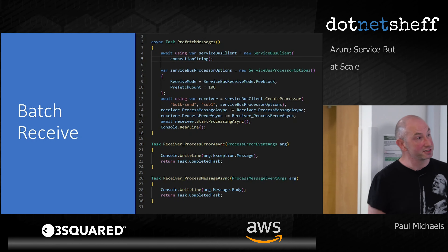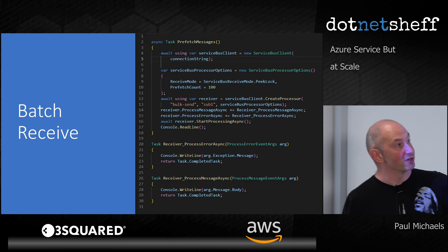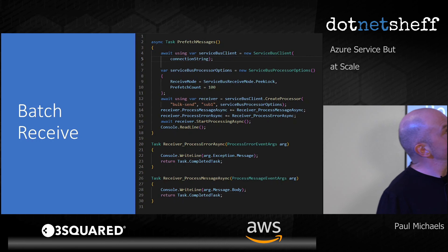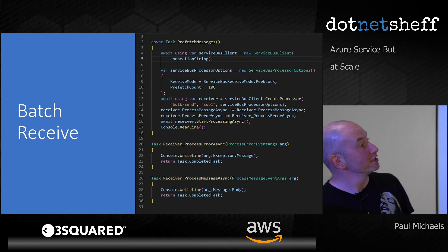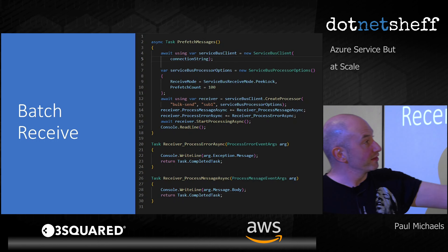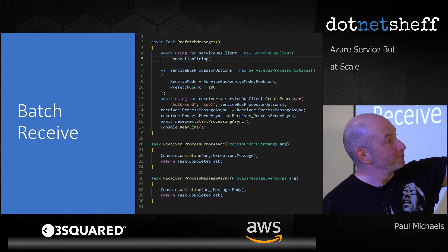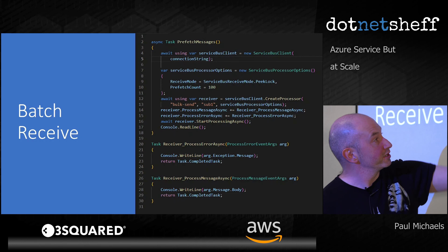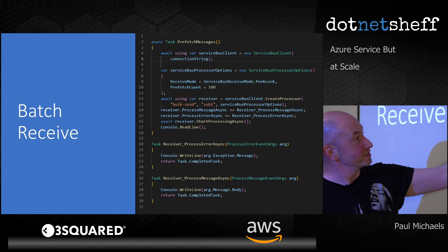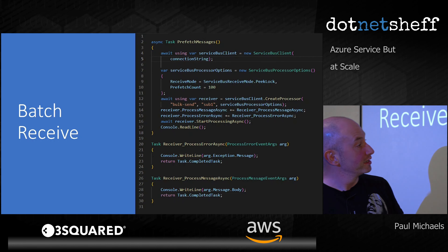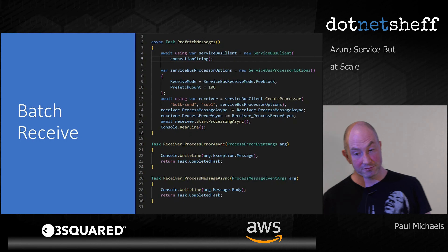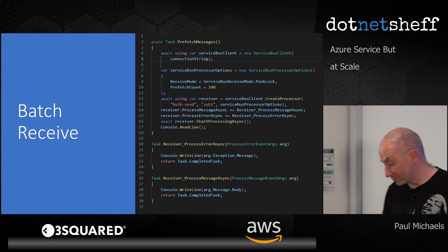Here's an example of a prefetch. There's a lot of code — same sort of idea. The key thing is telling it you've got a prefetch count of 100. Rather than actually pulling it, I've asked for a processor — on line 12 there's create-processor, and then on line 16 just say start processing. That reads it in an event-driven style, but it'll read ahead 100 at a time and bring them back.